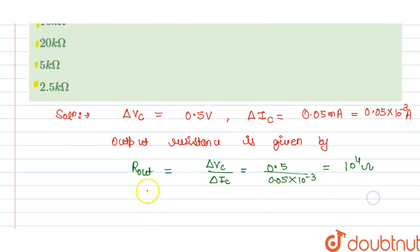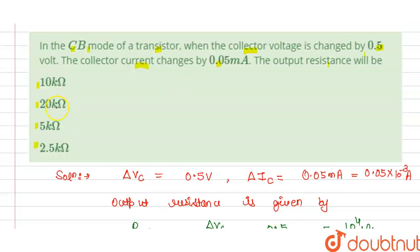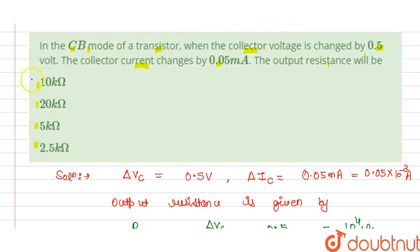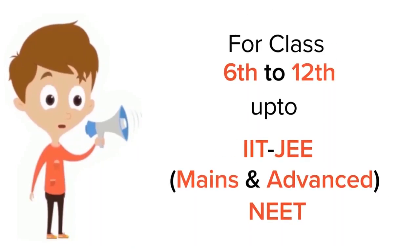Or we can say that resistance output is 10 kilo ohm, and this is the answer for the question. Now we check which option is correct here. So this is 10 kilo ohm, so the output resistance will be option A is correct here, that is 10 kilo ohm.